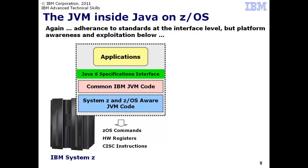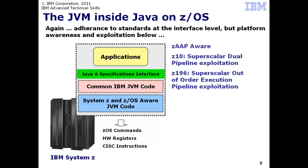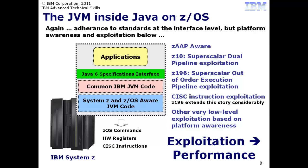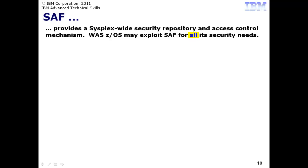This is the code that understands and takes advantage of the ZOS operating system and the underlying hardware. For example, the JVM inside WAS-ZOS is ZAP aware and takes advantage of the superscalar design of the processing chip. The Z10 had a dual pipeline design and the new Z196 has an out-of-order execution pipeline design. The JVM also knows about and takes advantage of instructions burned into the chip as part of the CISC chip design, as well as a list of other low-level exploitation.